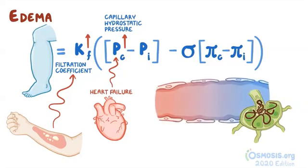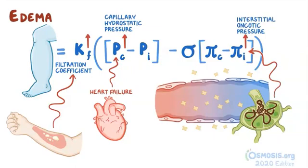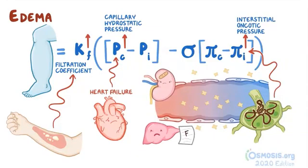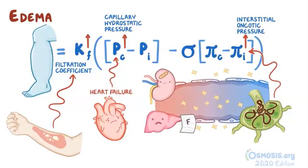What's more, when there's lymphatic blockage like filariasis, proteins leak out into the interstitium, which increases interstitial oncotic pressure, PI-I, causing lymphedema. In other instances, like in nephrotic syndrome, liver failure, and protein malnutrition, there's a decrease in plasma protein, which decreases capillary oncotic pressure, PI-C, and this also causes edema.